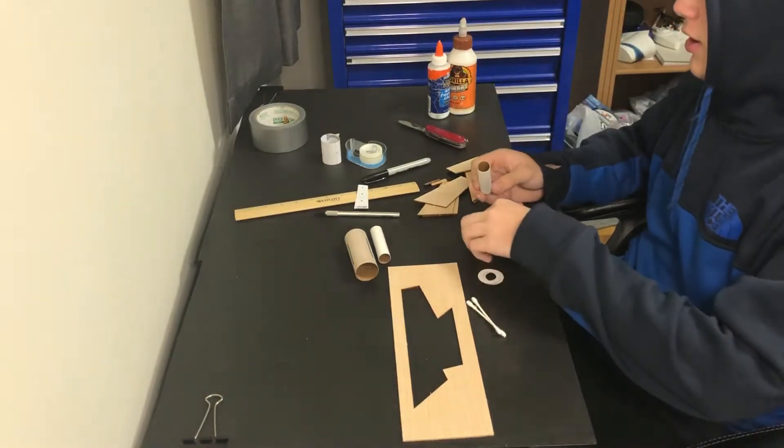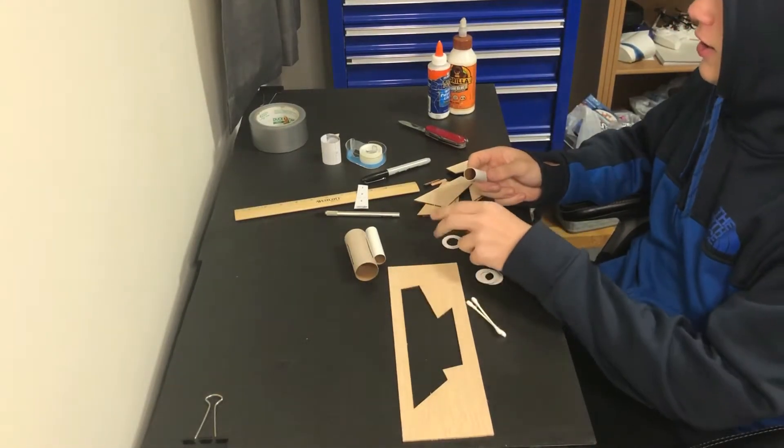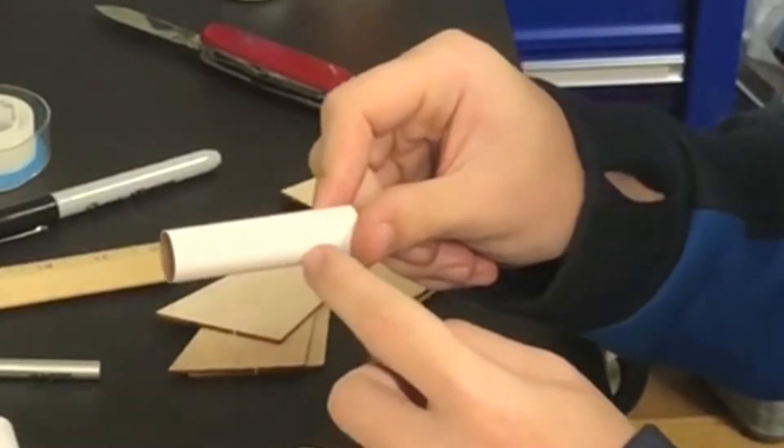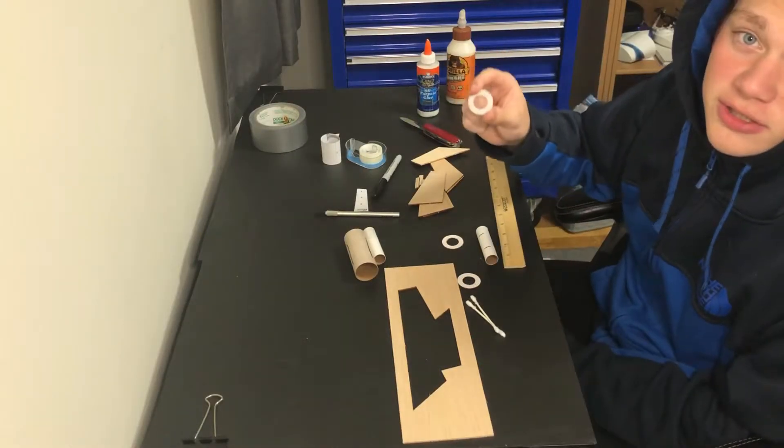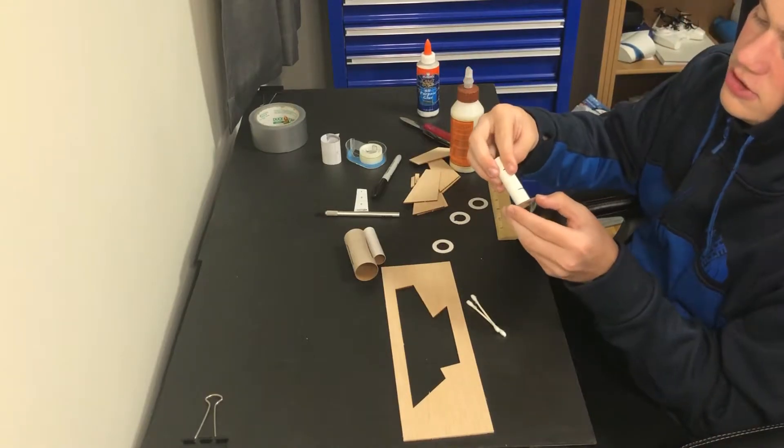Now grab one of your white tubes, and you're going to glue these on at three-quarter inch and two inches. It doesn't matter which rings you use, glue these where you made your marks.